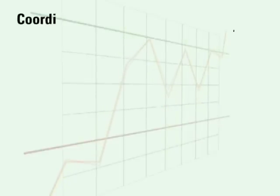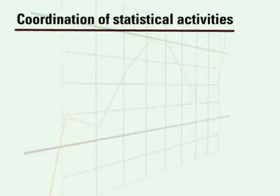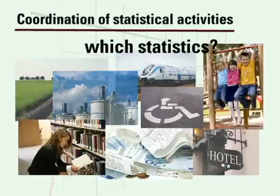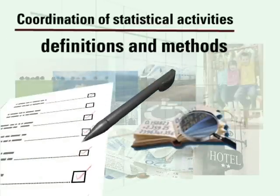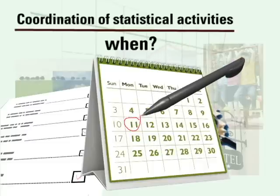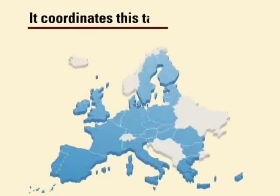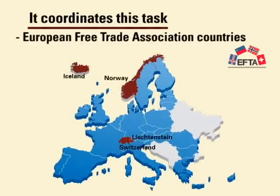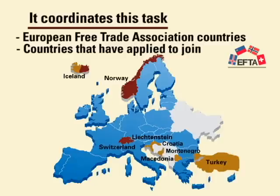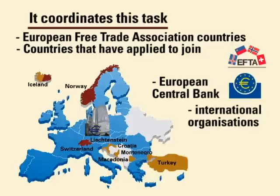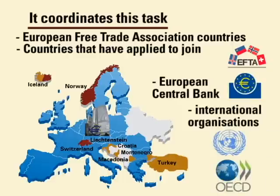Common interest statistical activity is coordinated in this framework, indicating among other things which statistics it is necessary to compile, which definitions and methods to follow in each set of statistics, and when the information is to be ready by. It also coordinates this task with European Free Trade Association countries, those countries that have applied to join, the European Central Bank, and international organisations such as the United Nations and the OECD.